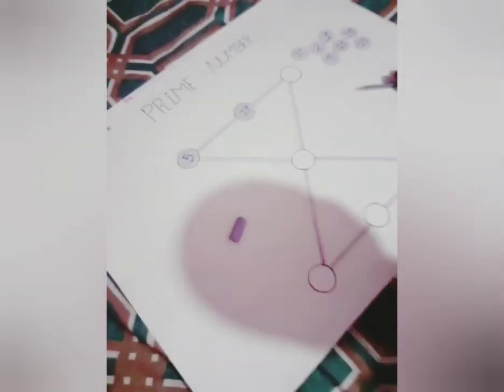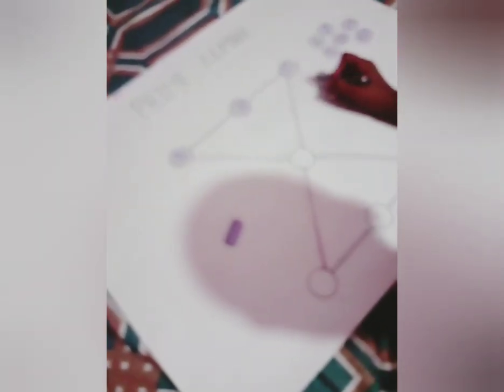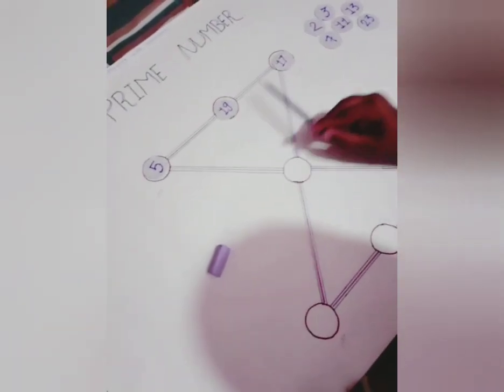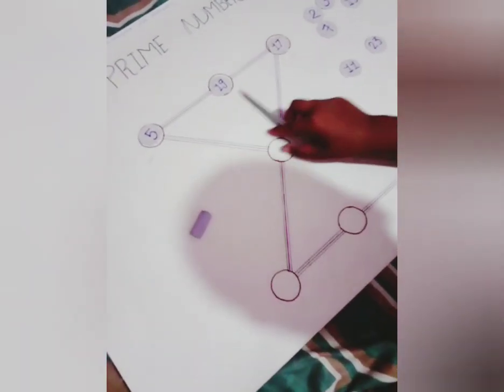Now we have 17 and 24. So this answer is 41. 5 plus 19 plus 17, this is 41. So here this ray is clear.